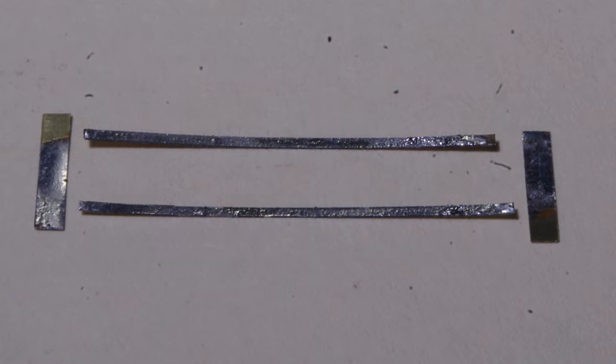Brass shim this thin can be cut easily with a hobby knife and a straight edge. And the pieces were then tinned on one side, which is the process of applying a thin layer of solder, leaving a coating of solder on one side as shown here.